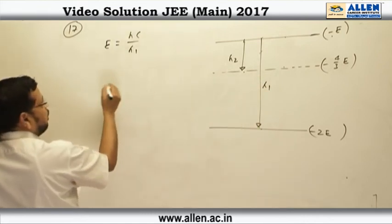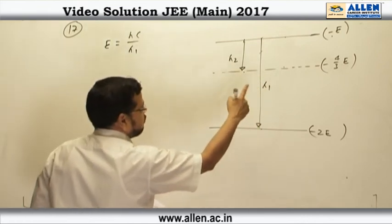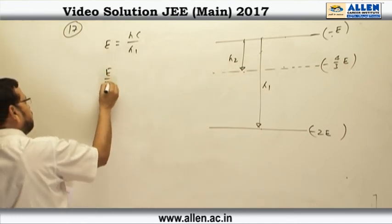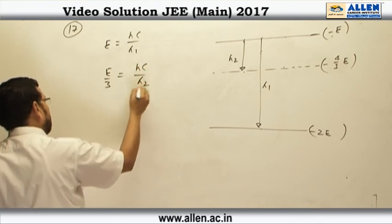and when the transition takes place between these two levels, then it is going to be minus 4 by 3 e minus of minus e that is e by 3 and this is going to be h c by lambda 2.